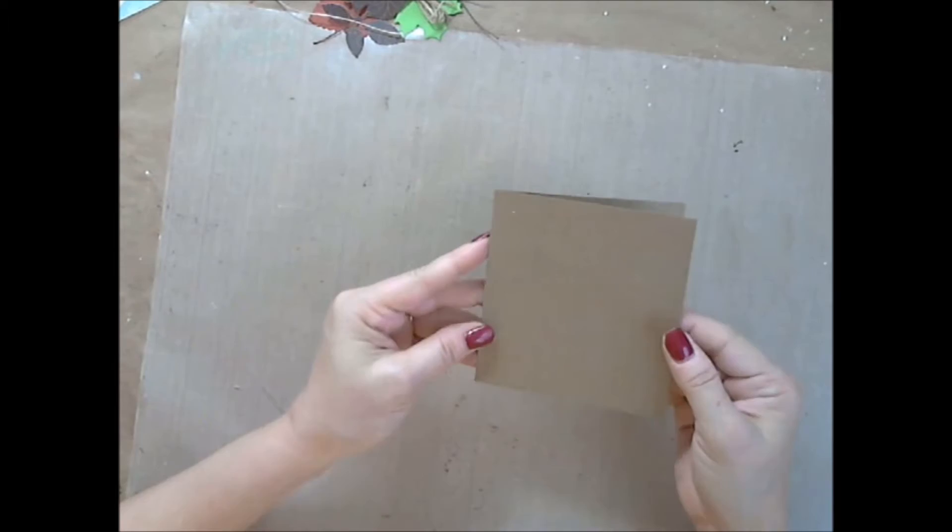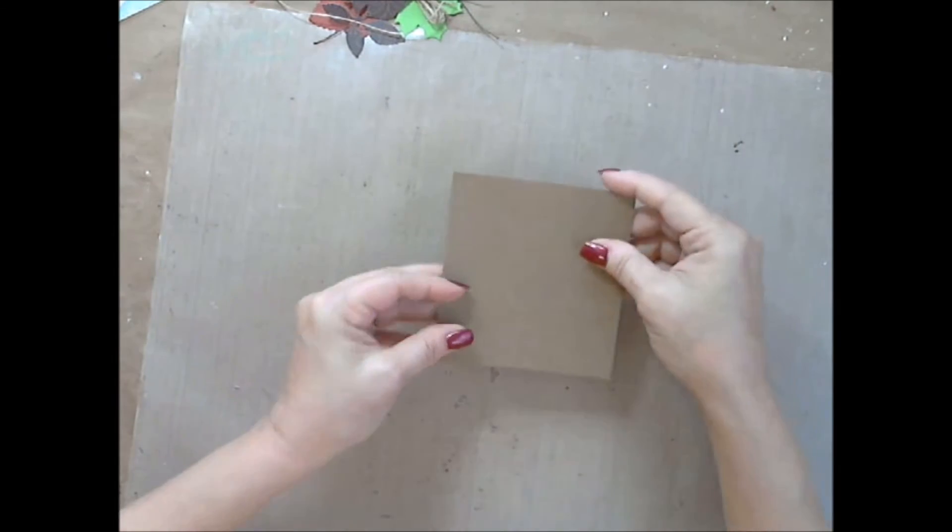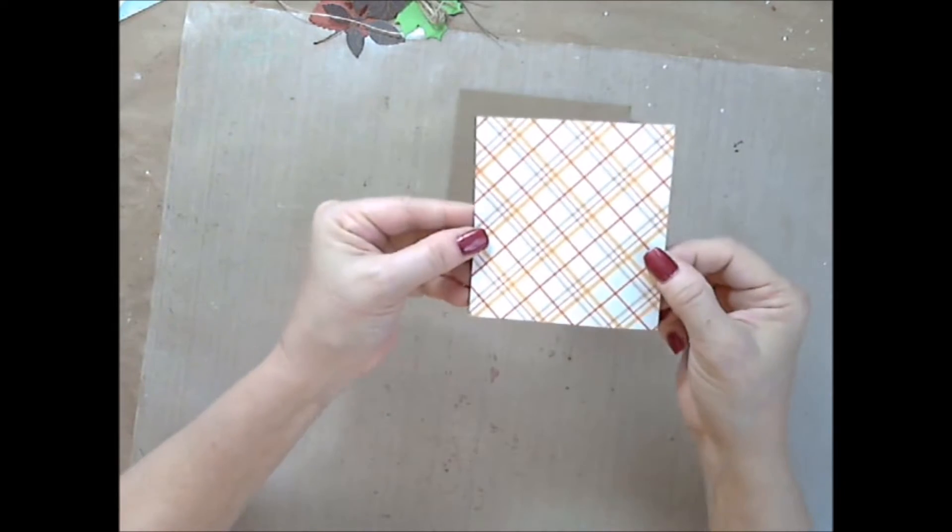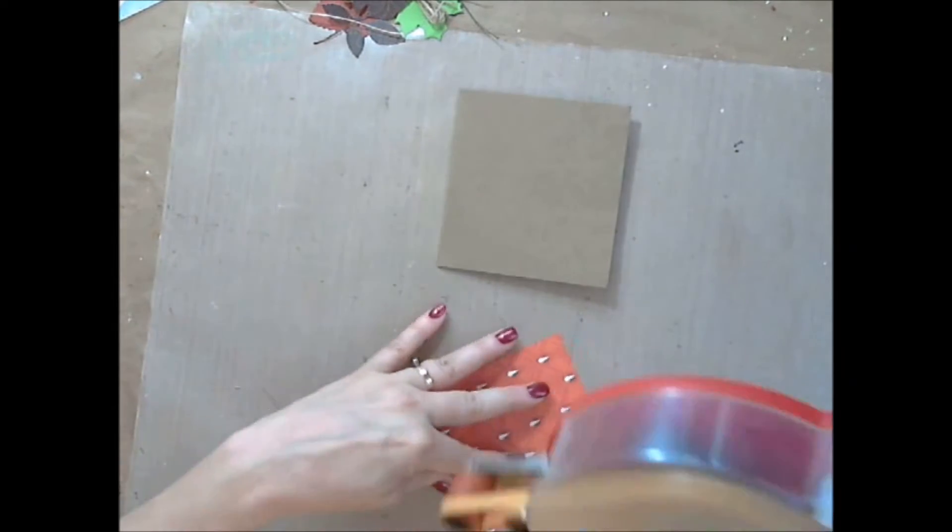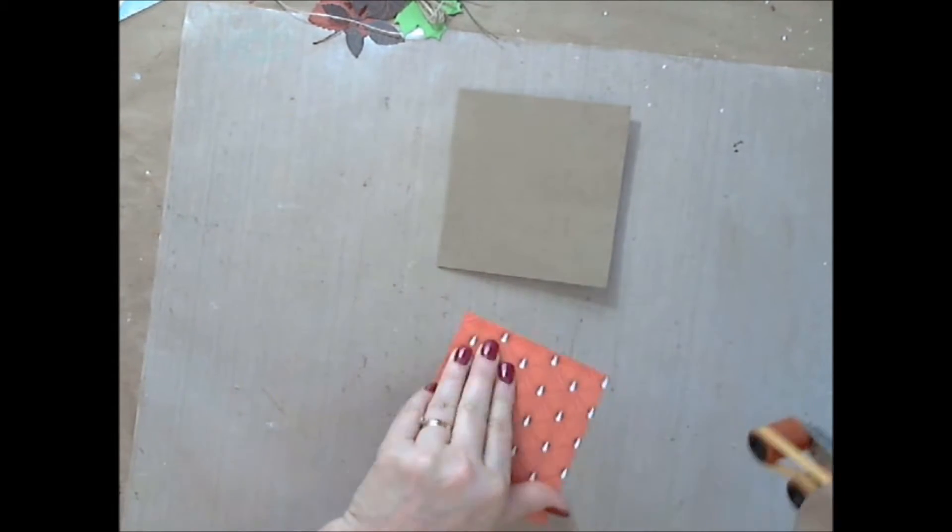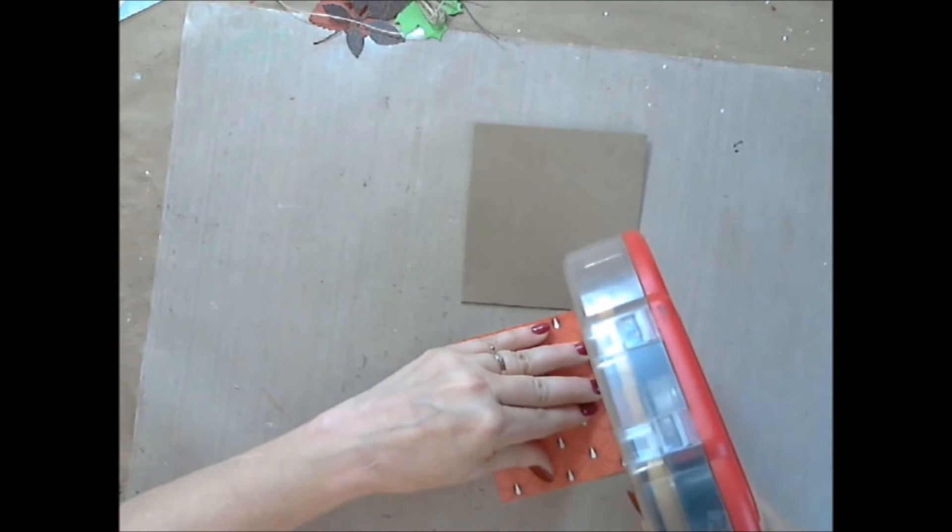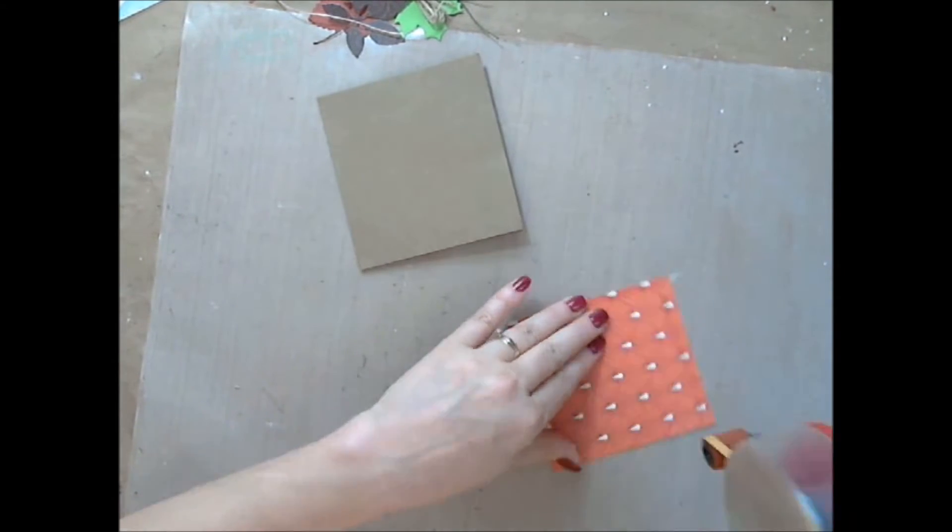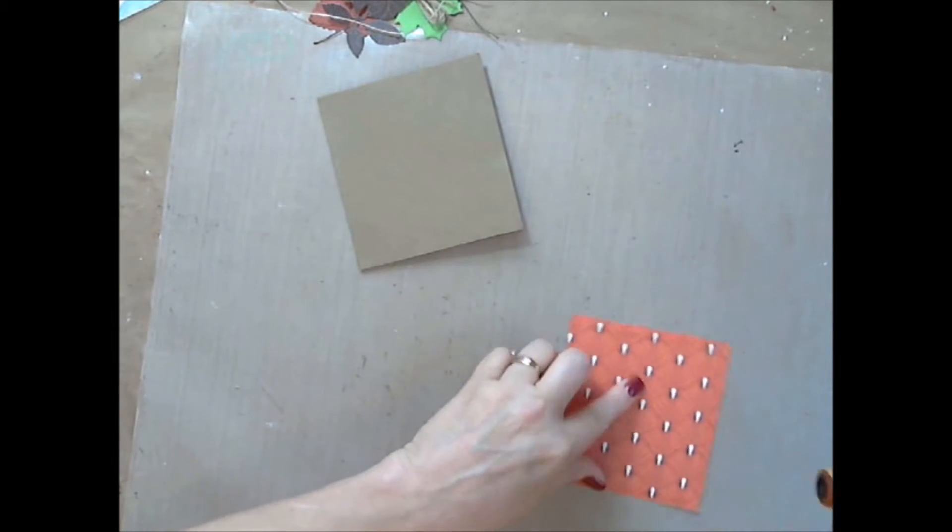Here I took a piece of eight and a half by eleven craft cardstock from my card stash and cut it down to eight and a half by nine inches. After cutting it, I folded it in half and created a four and a quarter by four and a half inch card.